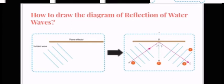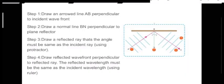Step 2: Draw the normal BN which is perpendicular to the plane reflector. Step 3: Draw a reflected ray that this angle must be same as the incident ray using protractor.